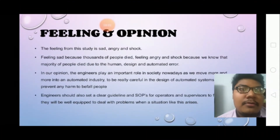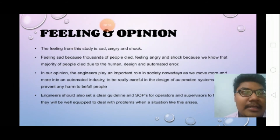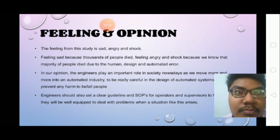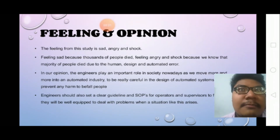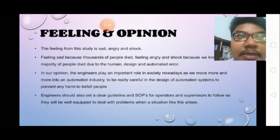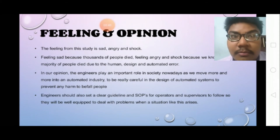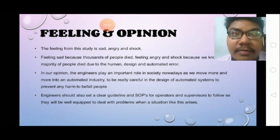I am here again to present about our feelings and opinions. From this study, our feelings are sadness, anger, and shock — sad because thousands of people died, and angry and shocked because the majority died due to human design or automated errors. Engineers could have created a backup shutdown plan for the reactor but didn't. In our opinion, engineers play an important role in society, and as we move into an increasingly automated industry, we must be very careful in the design of automated systems to prevent any harm to people.